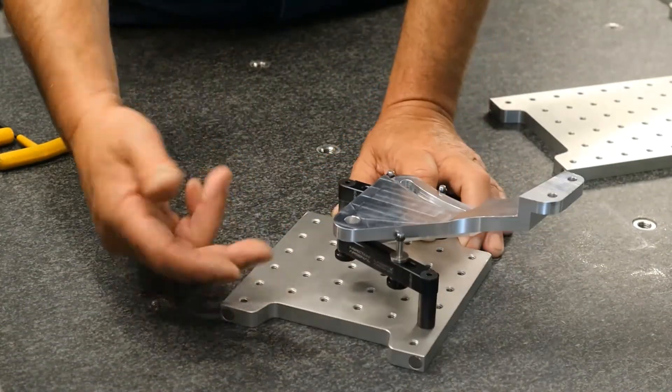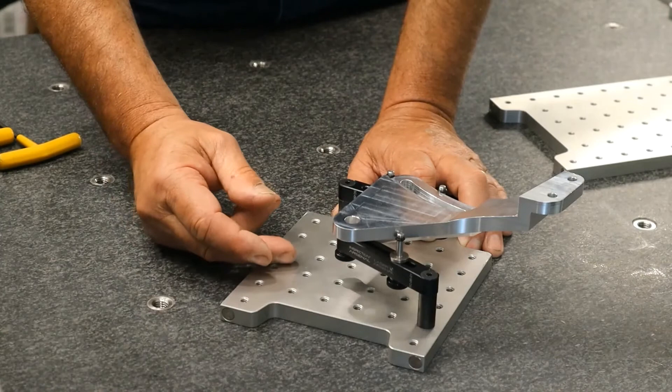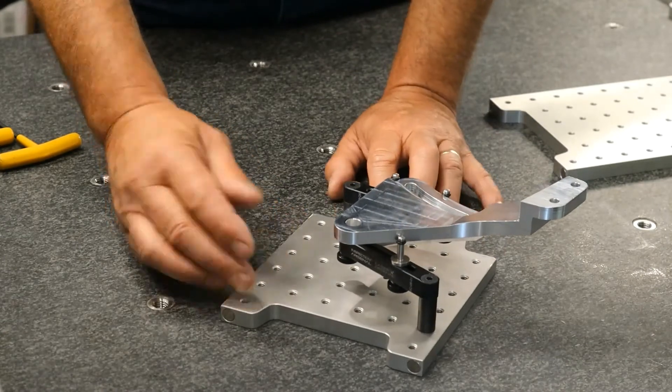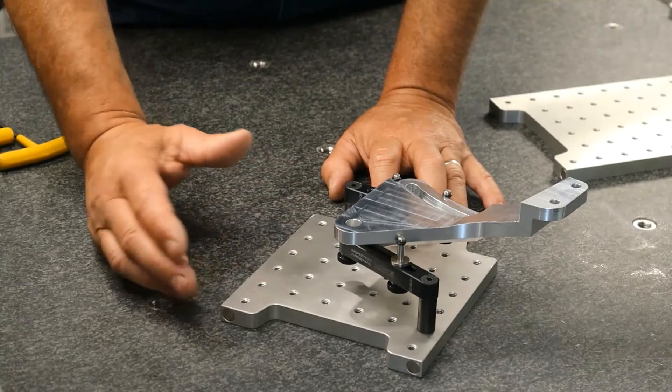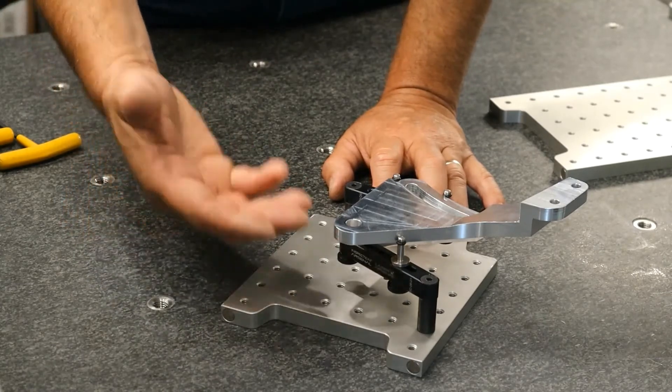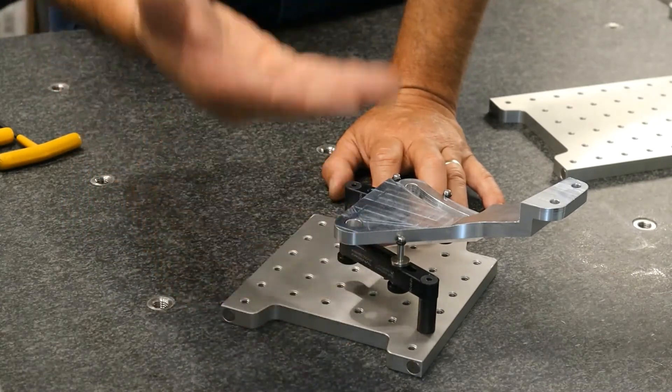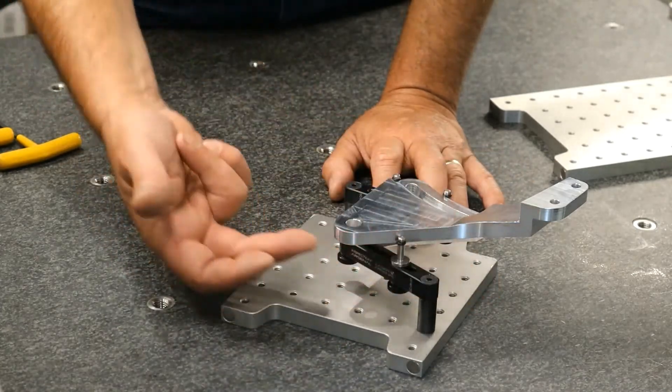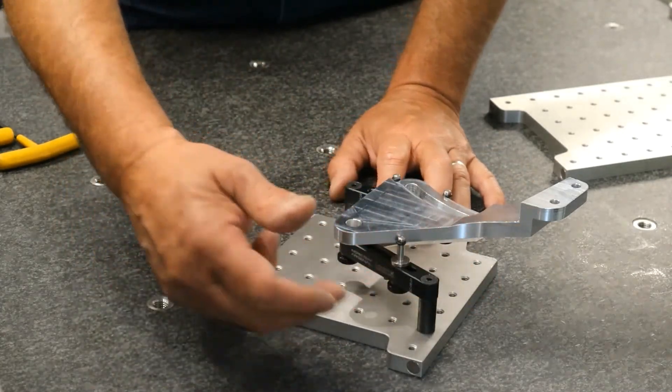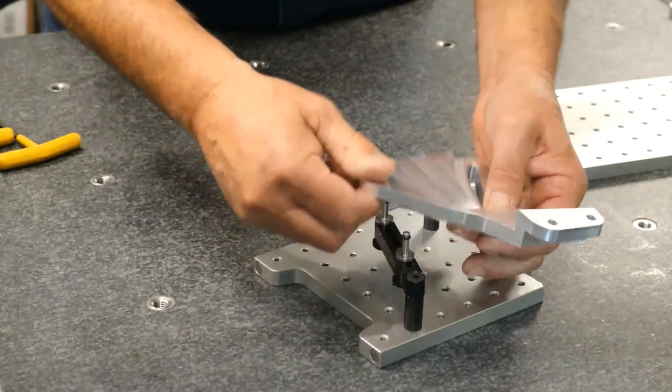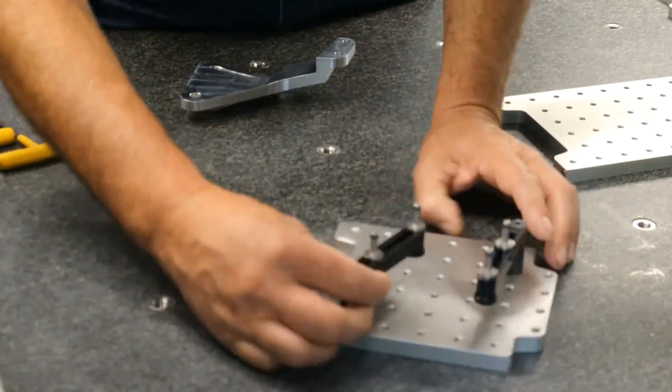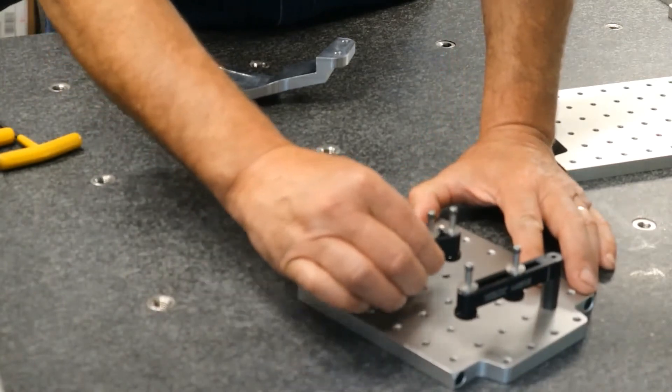What we have here are one-legged spider clamps. These you're going to use for some really oddball parts, very difficult parts to hold. It will help you get your work off the table and allows you to get underneath. In this case here, I'm going to take this out to show you.